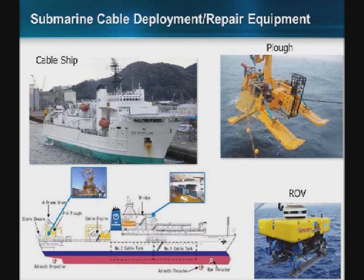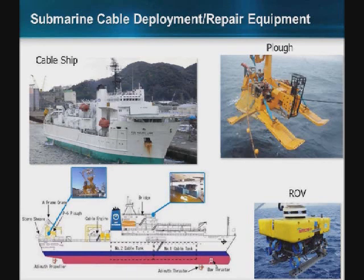This is a snapshot of typical repair and deployment equipment. You have a cable ship — a specialized ship that houses spare cable. It typically has multiple cable tanks, spooled, and you can have thousands of kilometers of cable in these tanks. Additionally, there's burial equipment such as plows and ROVs for shallow water burials.